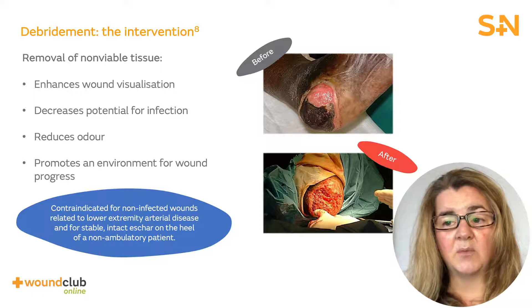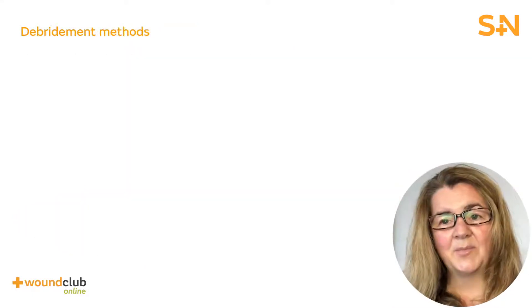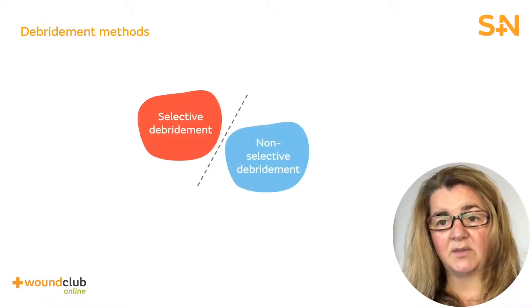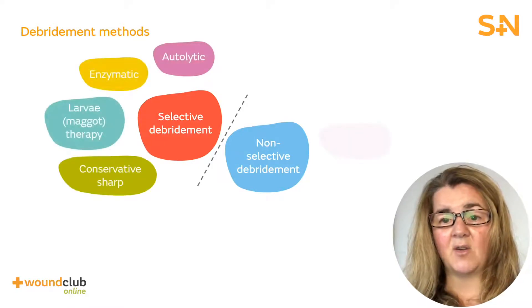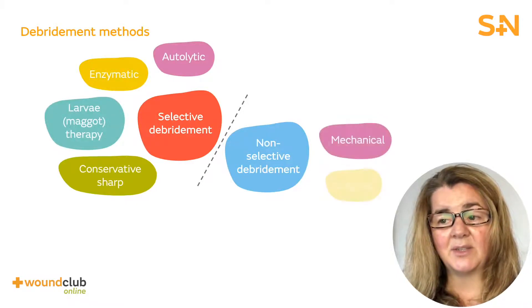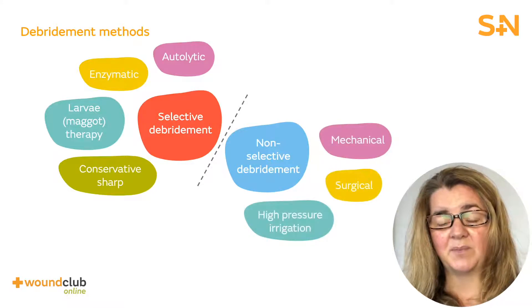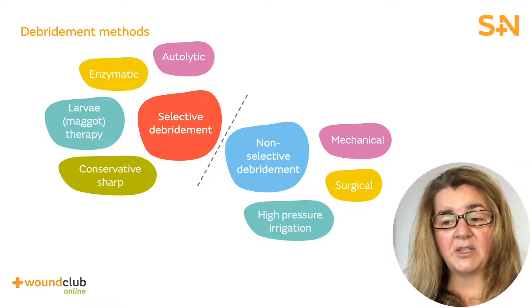Let's discuss some of the most common debridement methods. Debridement methods fall into two categories: selective debridement and non-selective debridement. Selective debridement can be autolytic, enzymatic, larvae, or conservative sharp debridement. Non-selective debridement can be mechanical, surgical, or high pressure irrigation. The choice of wound debridement method will be determined by a number of factors such as wound condition, patient's needs, and available resources.